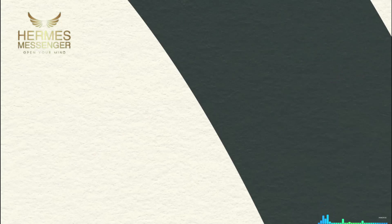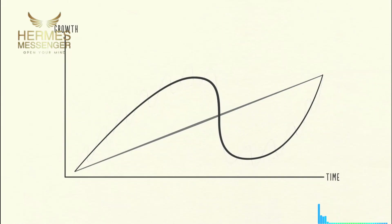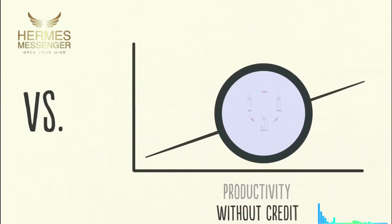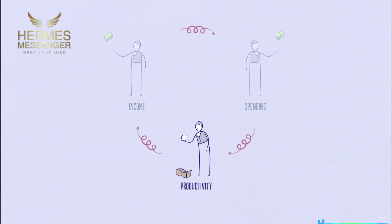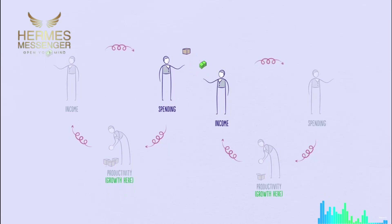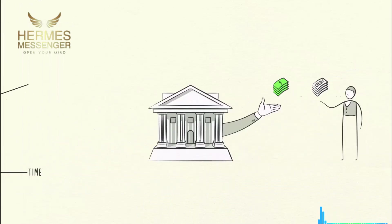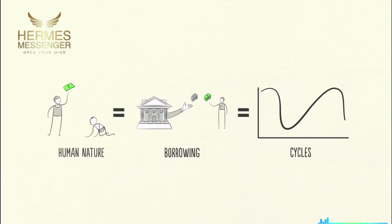While most people feel the swings, they typically don't see them as cycles because they see them too up close — day by day, week by week. Swings around the line are not due to how much innovation or hard work there is; they're primarily due to how much credit there is. In an economy without credit, the only way to increase spending is to increase income, which requires being more productive. Increased productivity is the only way for growth. But because we borrow, we have cycles. This isn't due to any laws or regulations — it's due to human nature and the way that credit works.